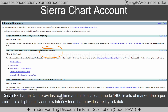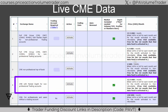The Denali exchange data feed provides real-time and historical data up to 1,400 levels of market depth per side, and it's a high-quality, low-latency feed that provides true tick-by-tick data. This is very important — you really want tick-by-tick data if you're going to be trading with order flow tools.